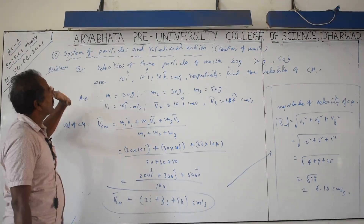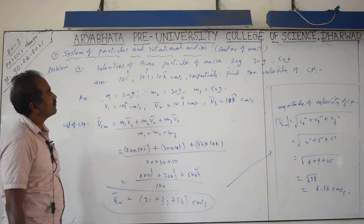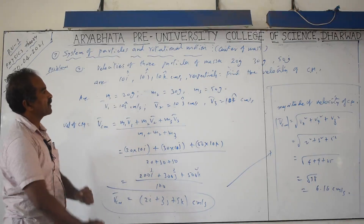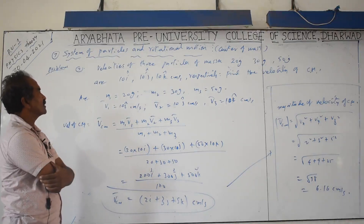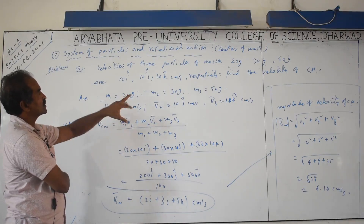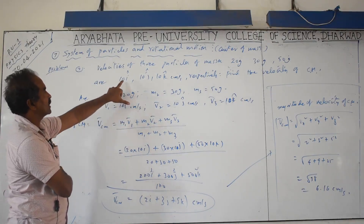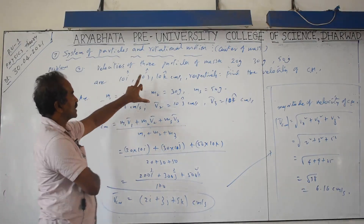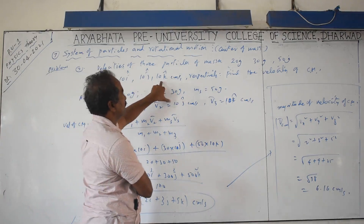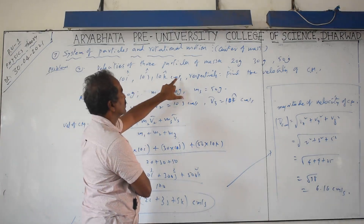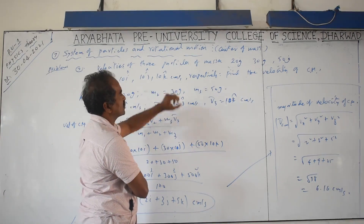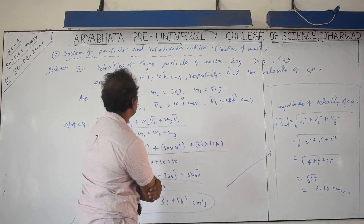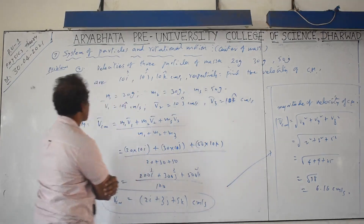This problem involves finding the velocity of center of mass for three particles of masses 20 grams, 30 grams, and 50 grams moving with velocities 10i, 10j, and 10k centimeters per second. One particle moves along the x-axis, the second along the y-axis, and the third along the z-axis. Find the velocity of the center of mass.